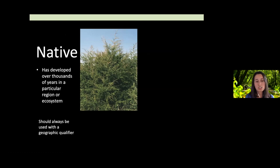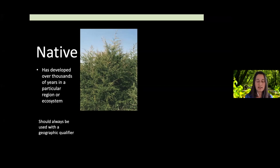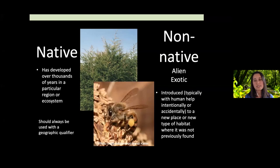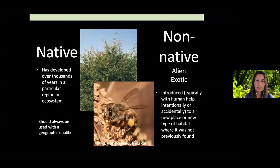Native tends to refer to things that have developed over thousands of years in a particular region or ecosystem, with the same group of plants, animals, insects, and other organisms. It should always come with a geographic qualifier — is something native if it's from North America but not this part of North America? Non-native may also be called alien, exotic, or introduced — brought here, typically with human help, either intentionally or accidentally, to a new place or habitat where it was not previously found.